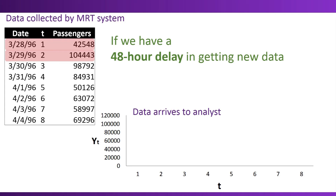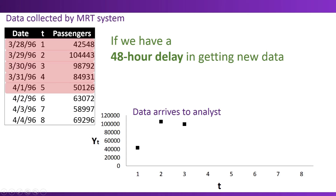On the third day, March 30, data are collected and only then does the analyst get the data from t equals 1. Notice that on March 30, the MRT system already has data on three days, but the analyst only sees the first time point. Similarly, as we move day by day into the future, we get one daily number, but that is a two-day-old number.